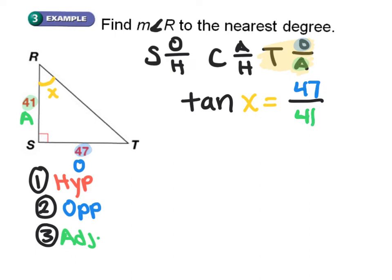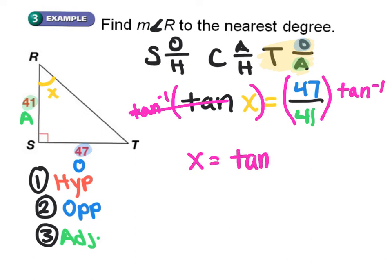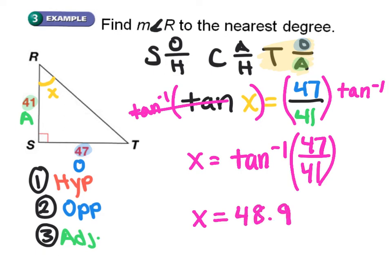In order to solve we're going to have to use the inverse trig functions. If I take the inverse tangent of both sides, the tangent cancels so it becomes x equals inverse tangent of 47 over 41. If you plug in inverse tangent 47 over 41, it gives us x equals 48.9, however this problem asks you to round to the nearest degree so your answer should be x equals 49 degrees.